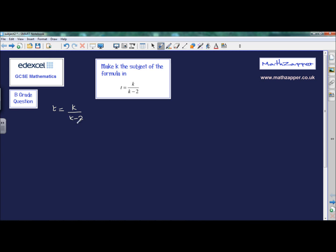But now I need to remove that as a fraction. I don't like that fraction there, so I can easily get rid of the fraction element by multiplying both sides by k minus 2. So t multiplied by k minus 2, which this time I definitely will put into brackets, is equal to k. All I've done there is multiply both sides by k minus 2.